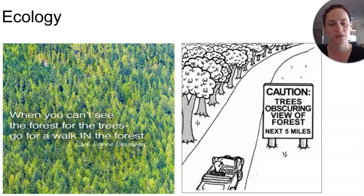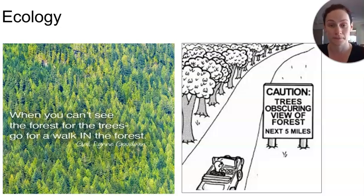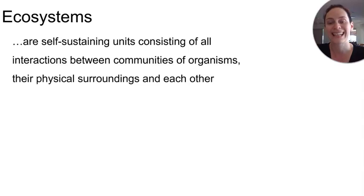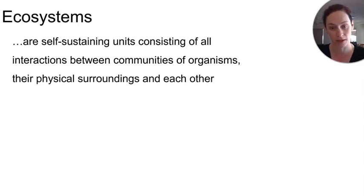So details are important to get right so that we can predict what's occurring at the big picture level. We're looking at a broad range of topics — not too much depth, but a lot to know. So we have to start with an understanding of what an ecosystem actually is. There are many definitions, but generally an ecosystem is a self-sustaining unit consisting of all the interactions between the communities of organisms and their physical surroundings.